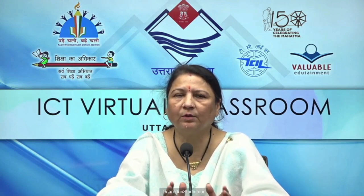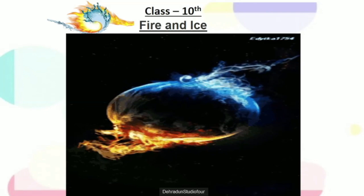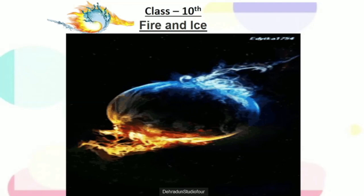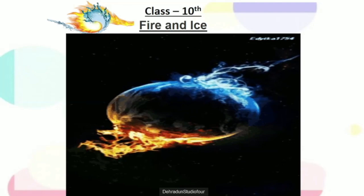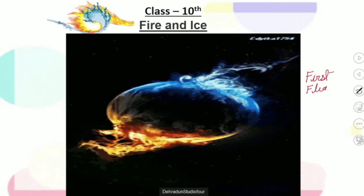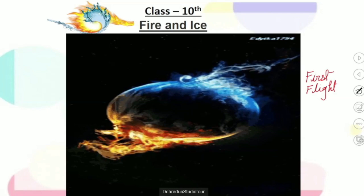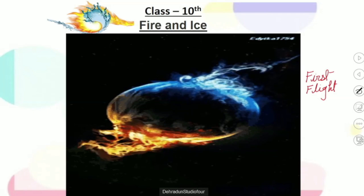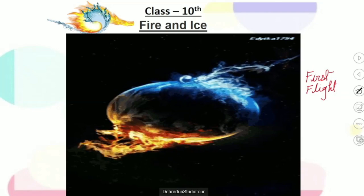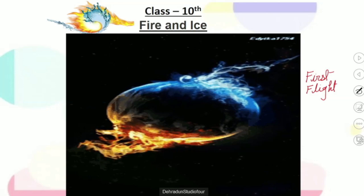Let's go to the smartphone screen. As you know, this is your second poem after the chapter A Letter to God. This is the first poem from the book First Flight. Here Robert Frost has told us that one day the world would end either by fire or by ice. Now we have two prospects and we have to contrast them with some hatred state and desire.